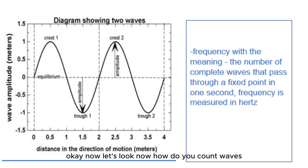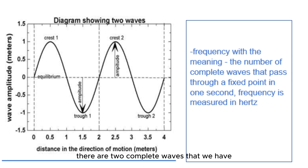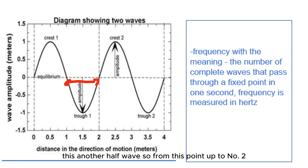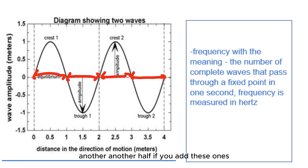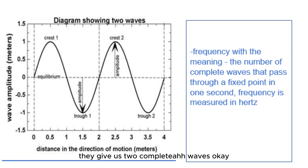Now let's look at how to count waves. The question asks how many waves there are, and the answer is two complete waves. From this point to number two is one half-wave, and the next half makes one full complete wave. Then from there to number four is another complete wave. Adding all the halves together gives us two complete waves.